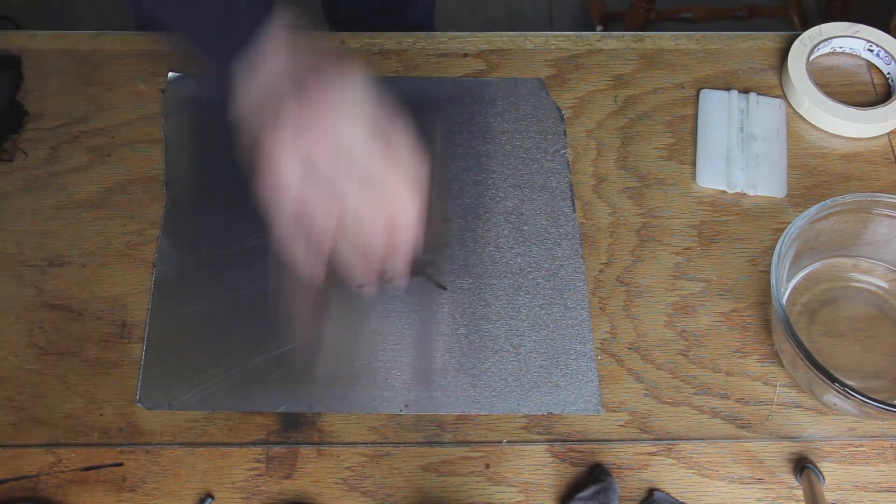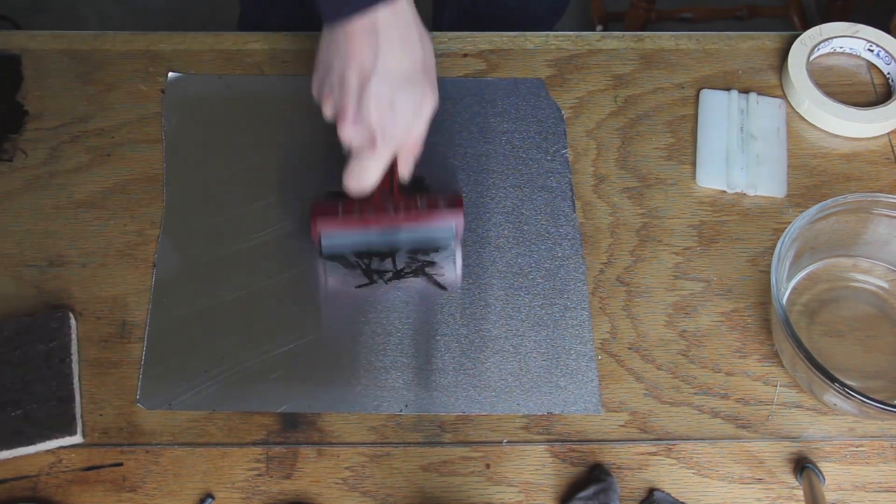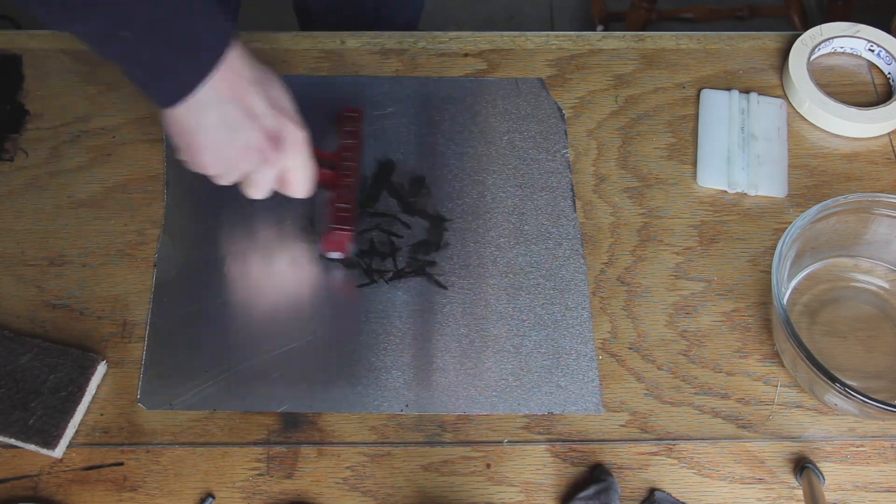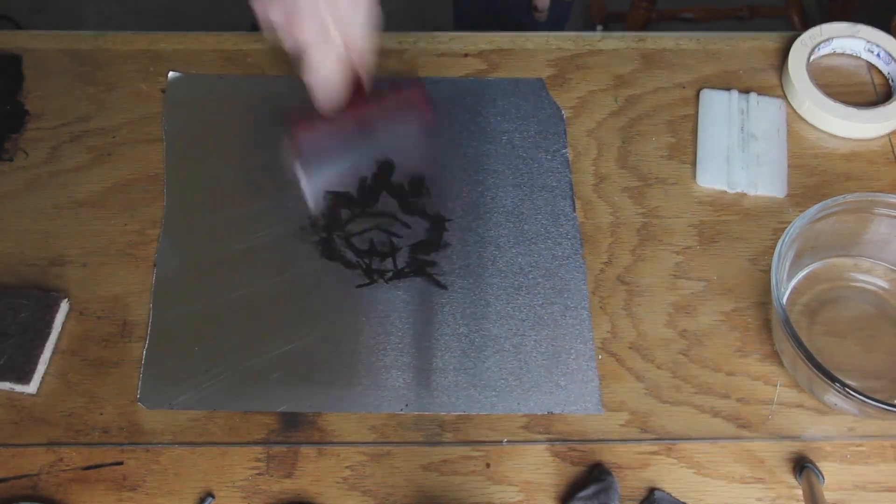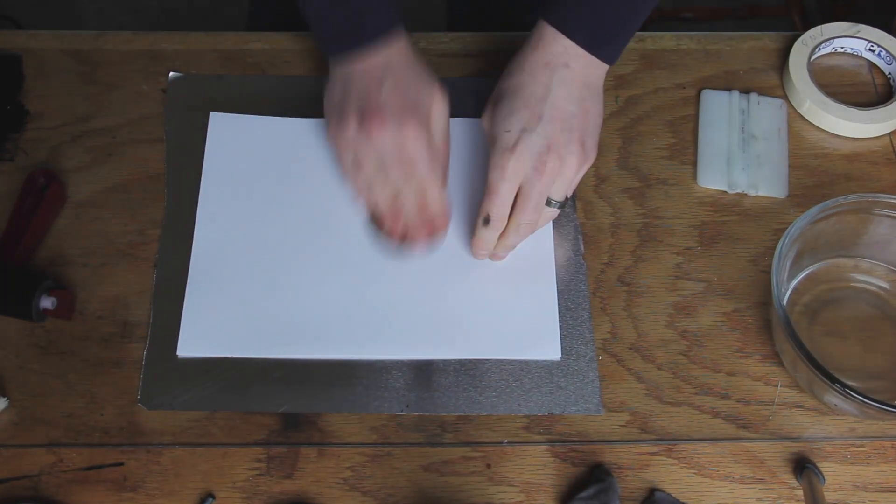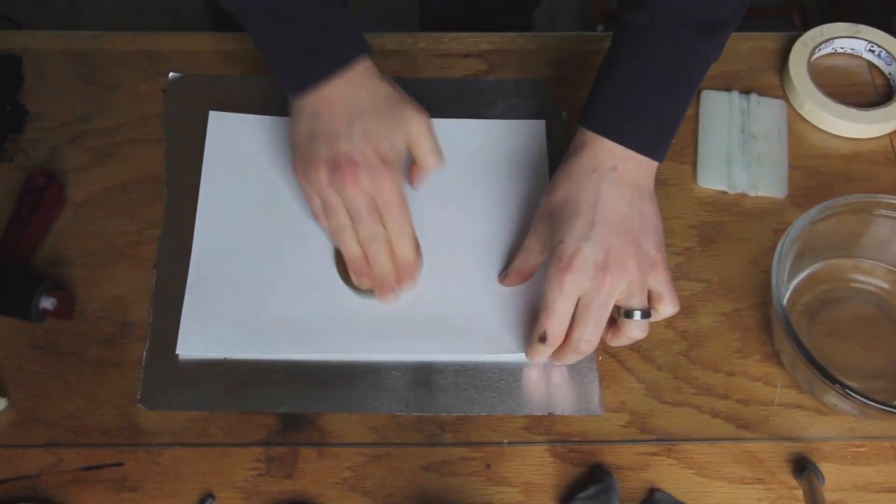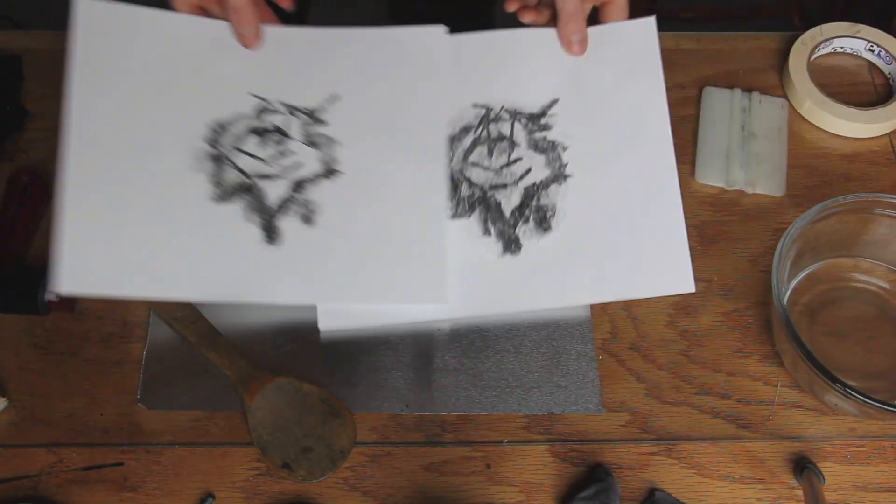Printing, printing, printing and what's starting to happen you can kind of see is I'm getting ink in areas I don't want. So when ink gets into the negative areas of the drawing that's called scumming so you can see there's a lot of scumming happening here.